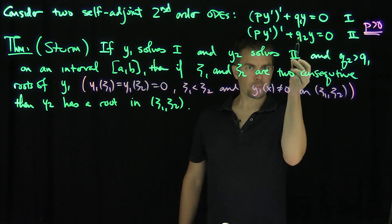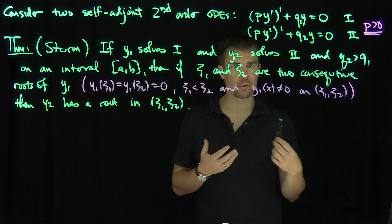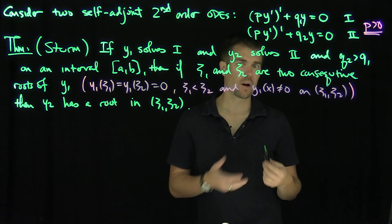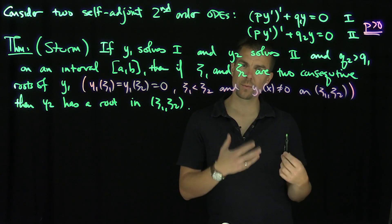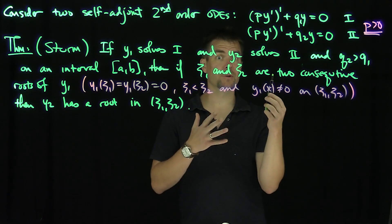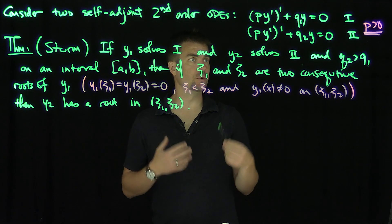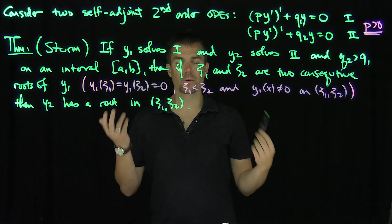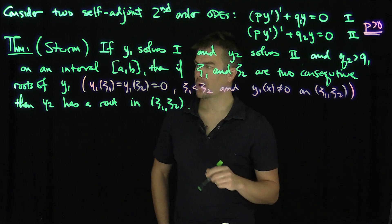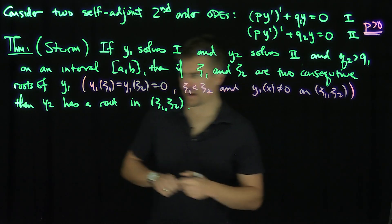Of course the assumptions will force certain sign conditions on Q1 and Q2 — this just says if there happen to be roots, then this must happen. It might be that these things don't have roots at all. So we're in the situation where we assume they have roots. Let's look at a trigonometric example to keep in the back of our minds, where Q1 = n² and Q2 = m².